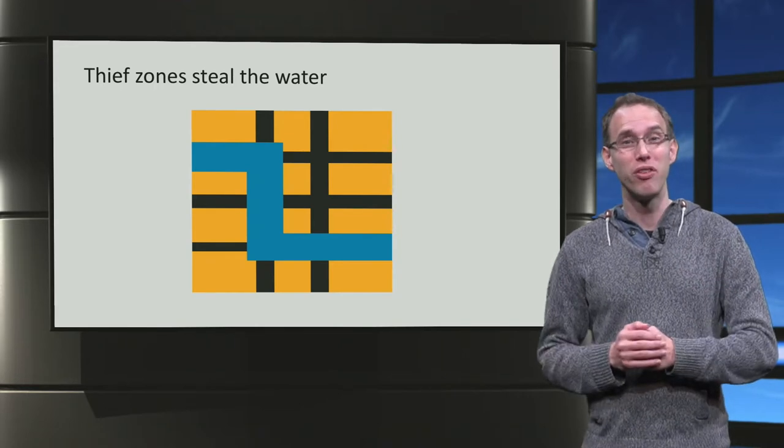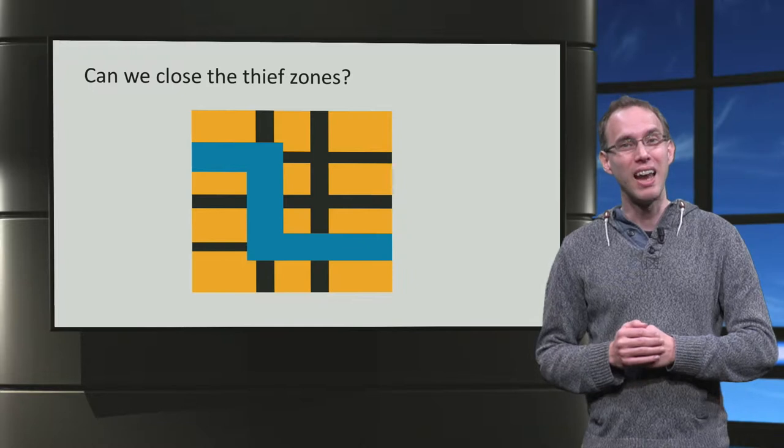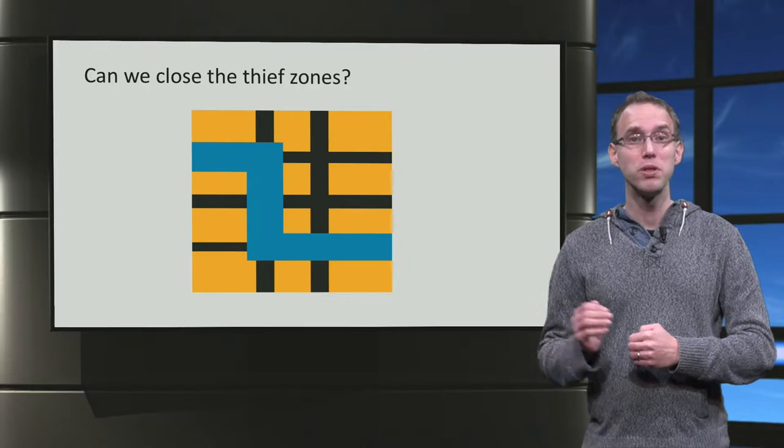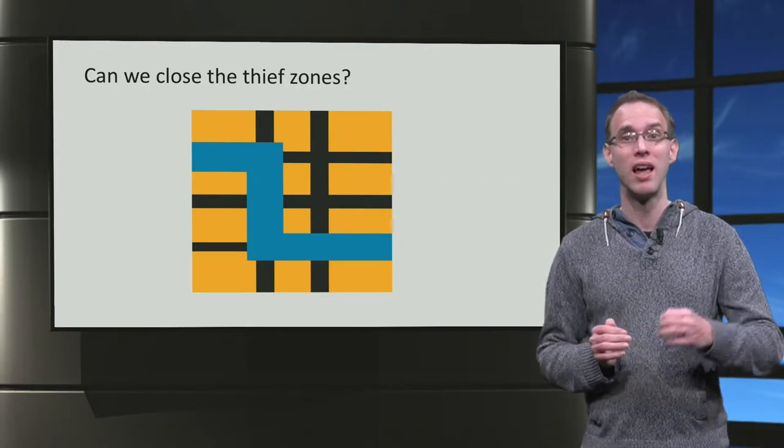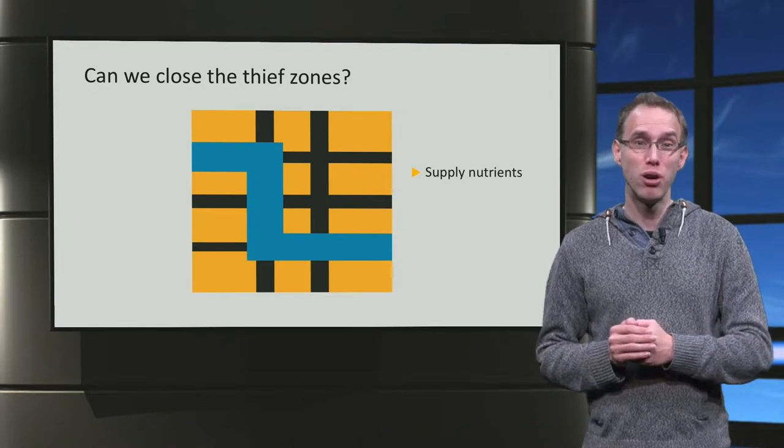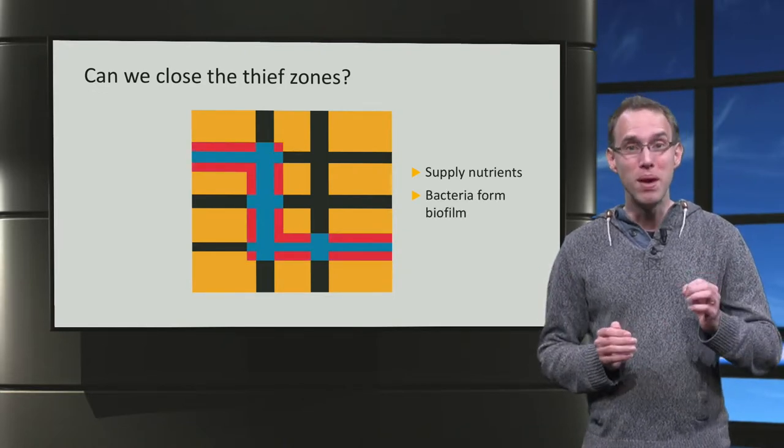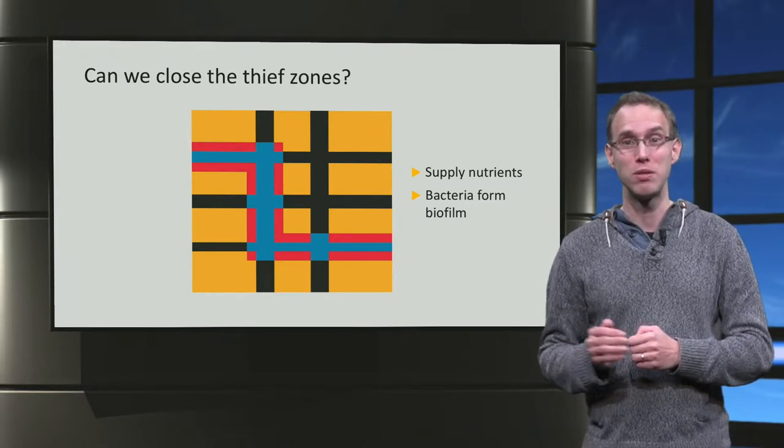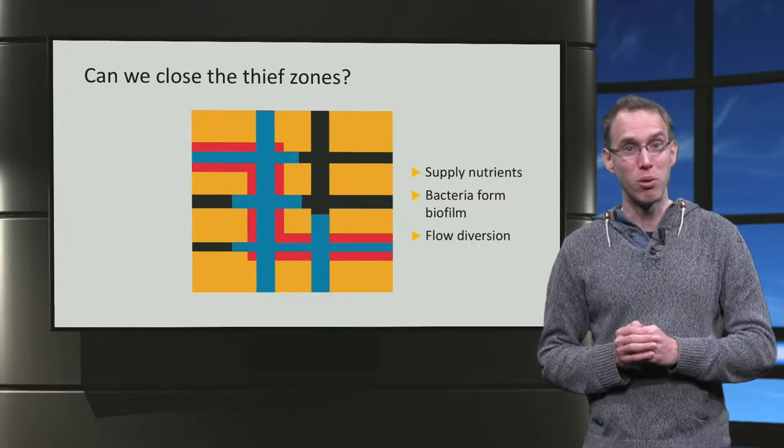Can we close those thief zones? Maybe as follows. In every reservoir all kinds of bacteria are present. Some species form a biofilm when supplied with the right nutrients. If we manage to grow such biofilms in our thief zones, we may be able to obstruct the pores in the thief zones with this biofilm. We will call this process bio-clogging.